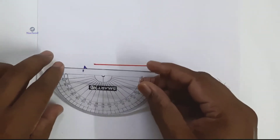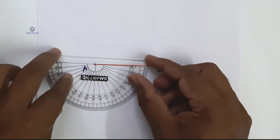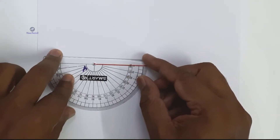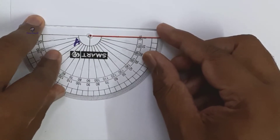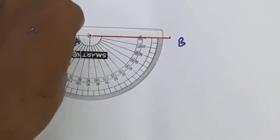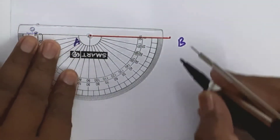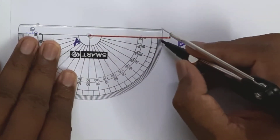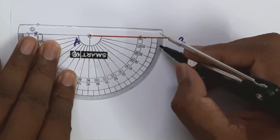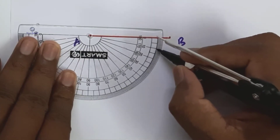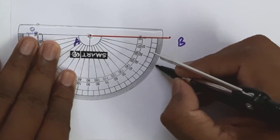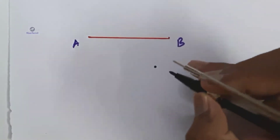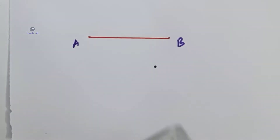Using a protractor at point A, draw ray AE such that angle BAE is equal to 25 degrees. Mark between 20 and 30 degrees — mark 25 degrees and complete the ray.